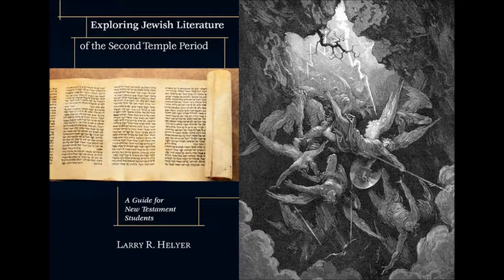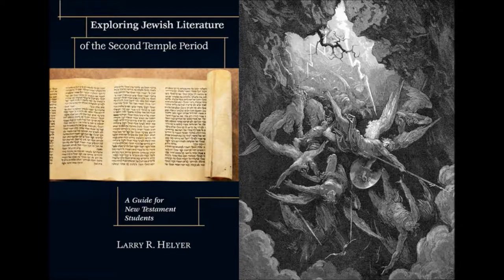You could buy a book like Larry Hellyer's book — his last name is spelled H-E-L-Y-E-R. He has a book called Exploring Jewish Literature of the Second Temple Period: A Guide for New Testament Students. It's published by InterVarsity. That's a good book to have because he'll talk about this material and help you build a framework for approaching it — knowing when it was written, what the books are about, what the historical circumstances were, and what to look for as you read.